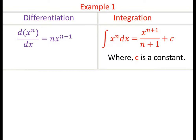In differentiation, the power of the variable reduces by 1 and the power is multiplied with the independent variable. In integration, the power of the independent variable increases by 1, and (n+1) becomes a divisor of the independent variable, and we add a constant c.